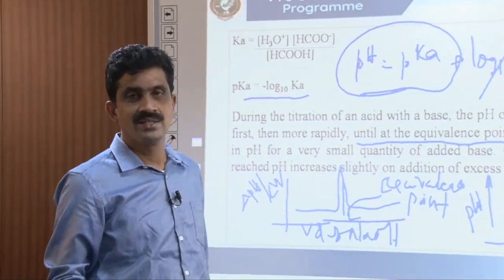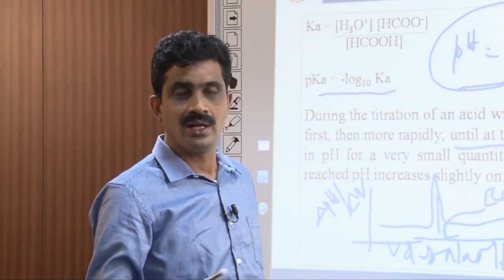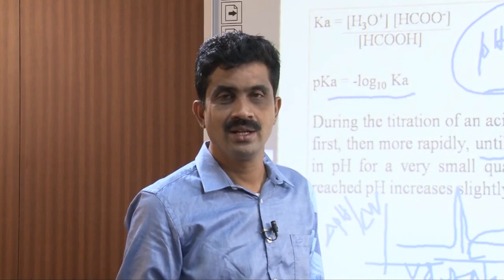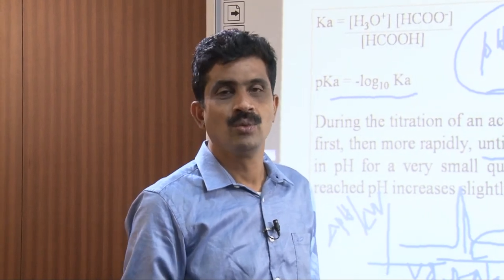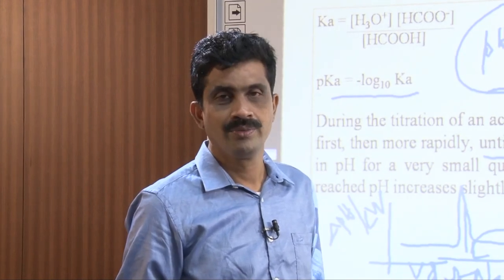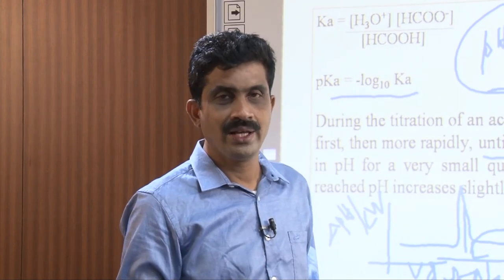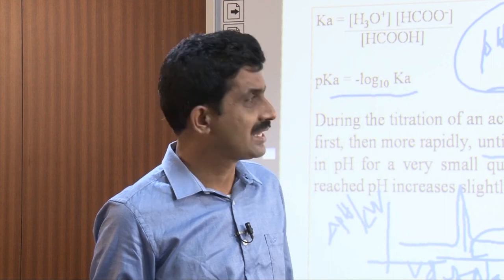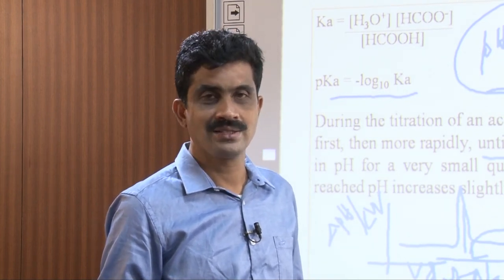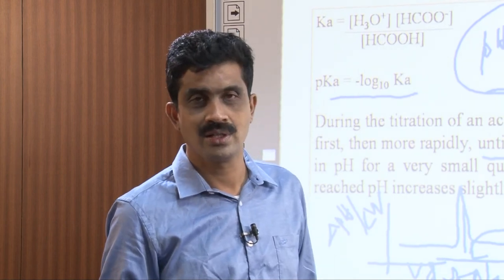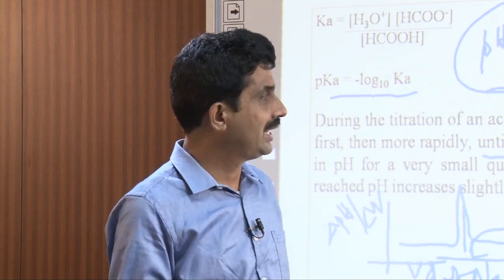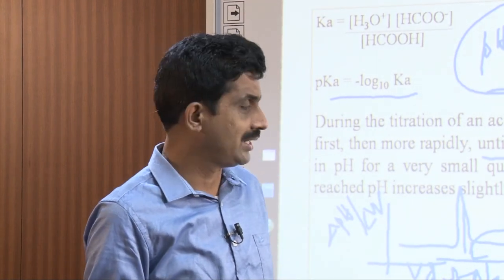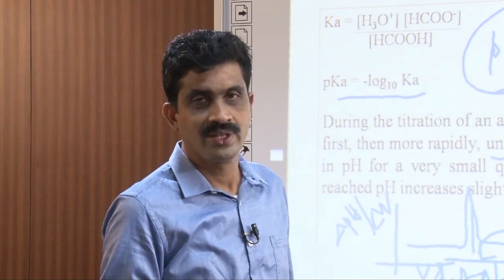In today's class, we have understood what ion selective electrodes are, how the glass electrode is constructed, how it operates, its working principle and potential development, how pH values are determined using glass electrodes, the advantages and limitations of glass electrodes, and how pKa values of weak acids are determined using the glass electrode. Thank you.